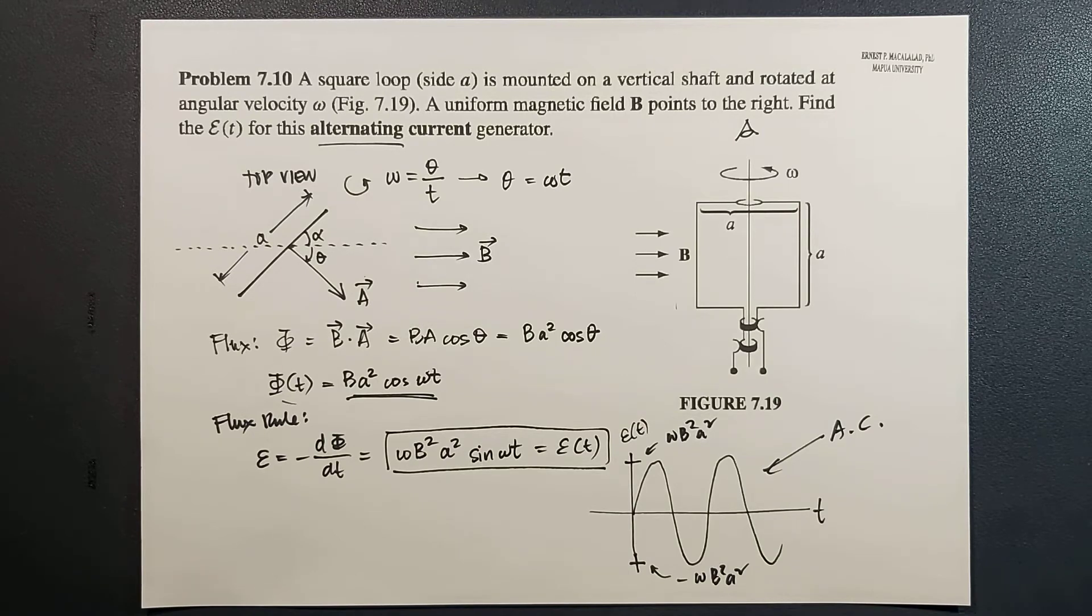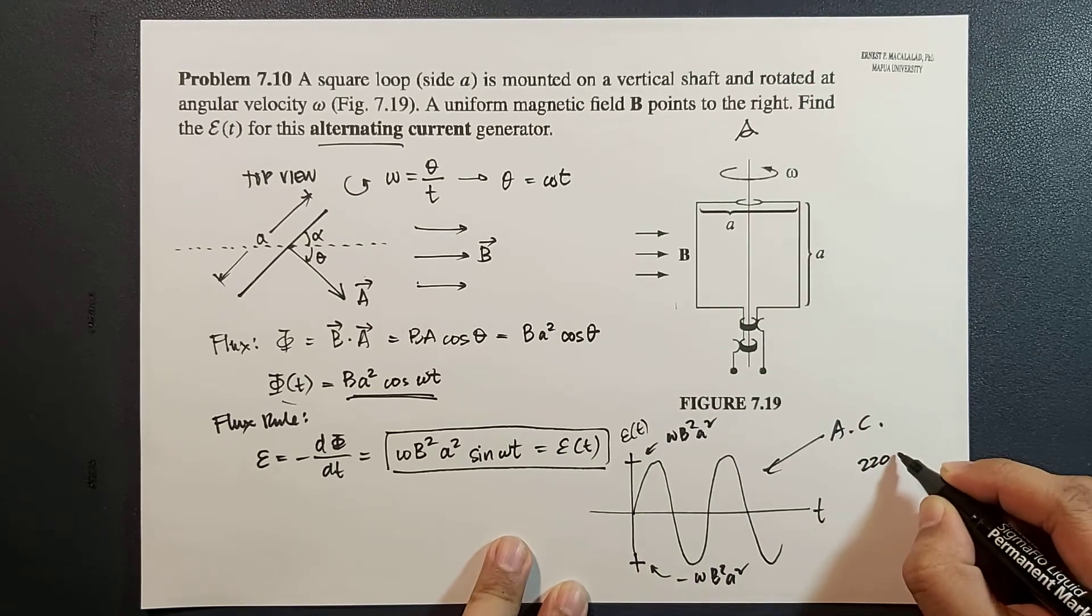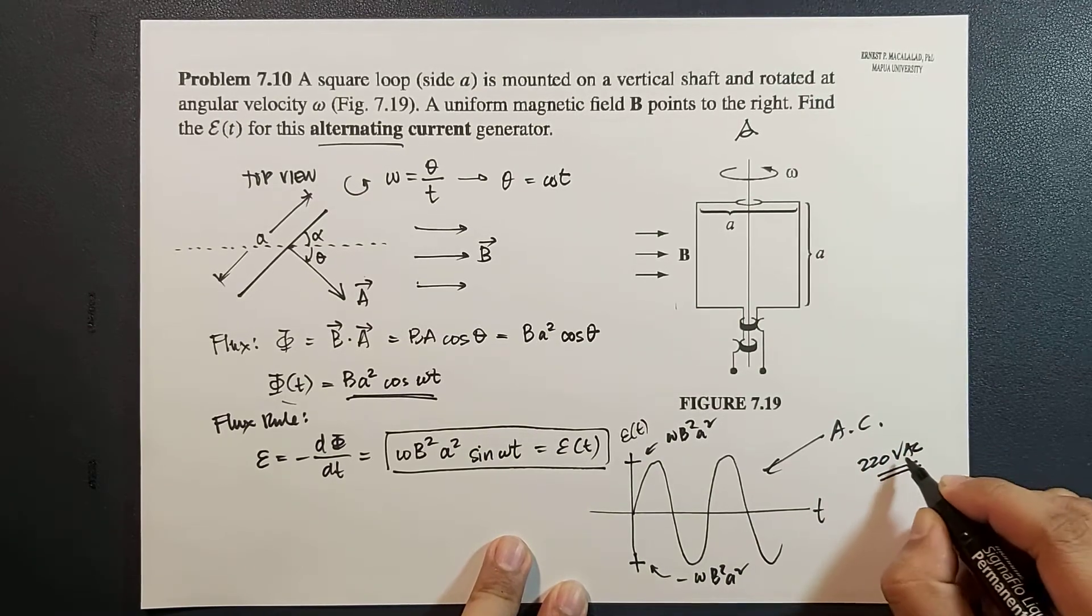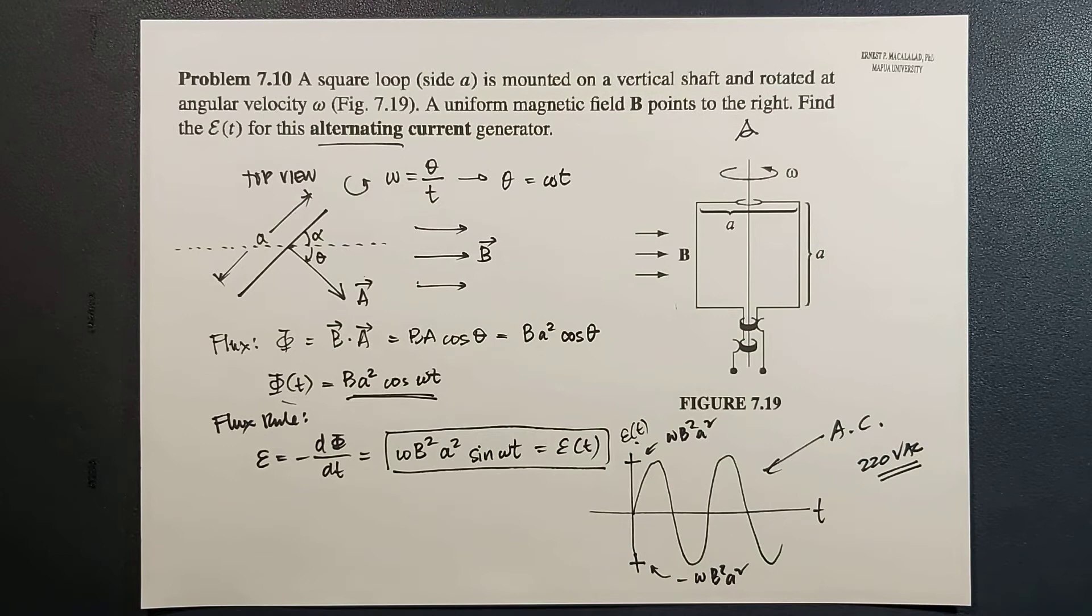And this is exactly what happens or what is produced by your usual generators. So your usual generators are generating alternating current, and that's why in our usual plugs in your homes we have an AC, alternating current. And the rating is usually 220 volts AC. So this is in volts and this is alternating current. So that is the answer for problem 7.10 of fourth edition of Griffiths.